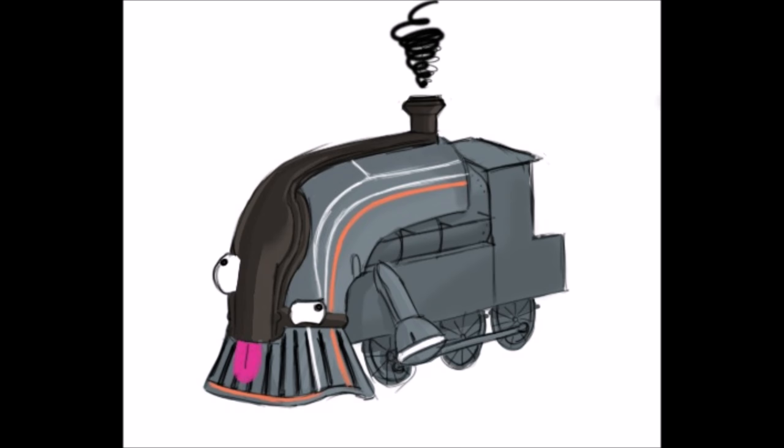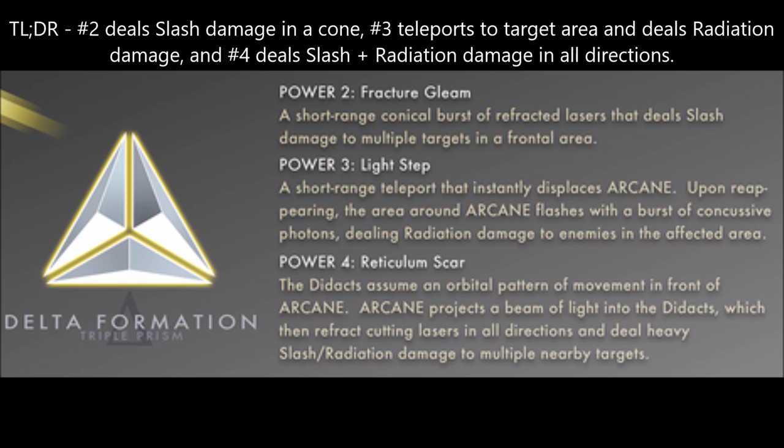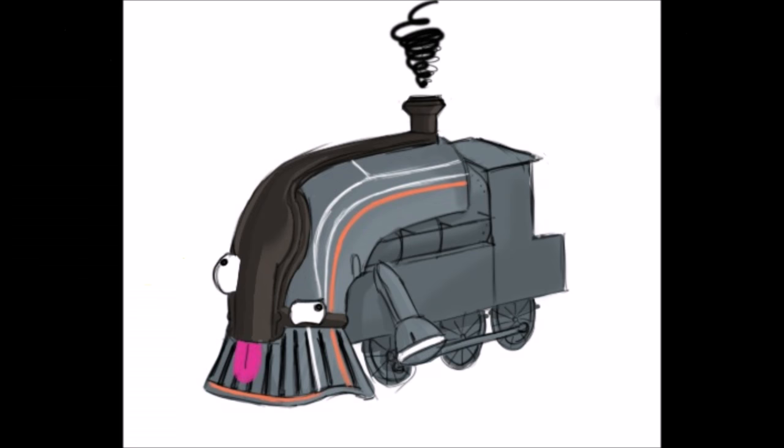Arcane's first ability set is Delta. Delta is Arcane's utility ability set. Delta comes with 3 powers: Fracture Gleam, Light Step, and Reticulum Scar. Fracture Gleam deals slash damage to nearby enemies within a cone-shaped range, Light Step teleports Arcane to a targeted location and deals radiation damage to nearby enemies, and Reticulum Scar creates lasers which fire in every direction, dealing slash and radiation damage to struck enemies. Both Fracture Gleam and Light Step have a short range, so keep in mind that Arcane isn't capable of picking off enemies from a distance with the Delta set, unless you build for power range.